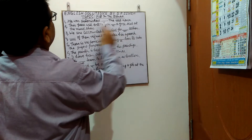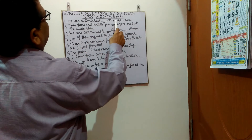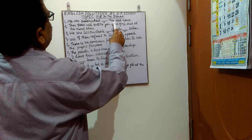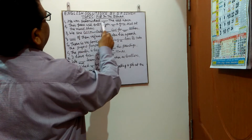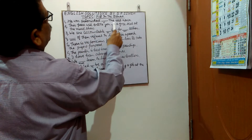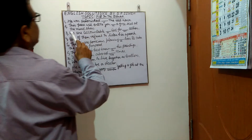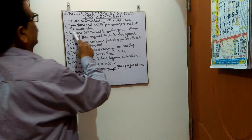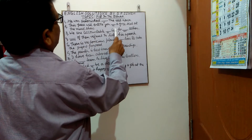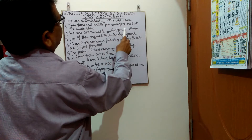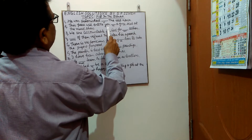Next sentence: 'This pass will entitle you ___ a free seat at the music show.' In the blank you have to put 'to'. The sentence will be: This pass will entitle you to a free seat at the music show.